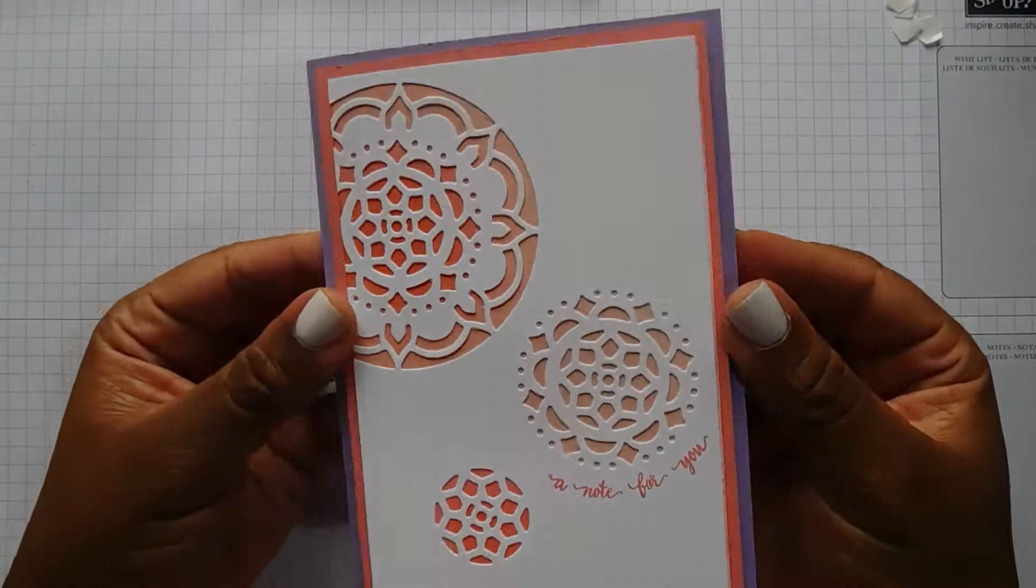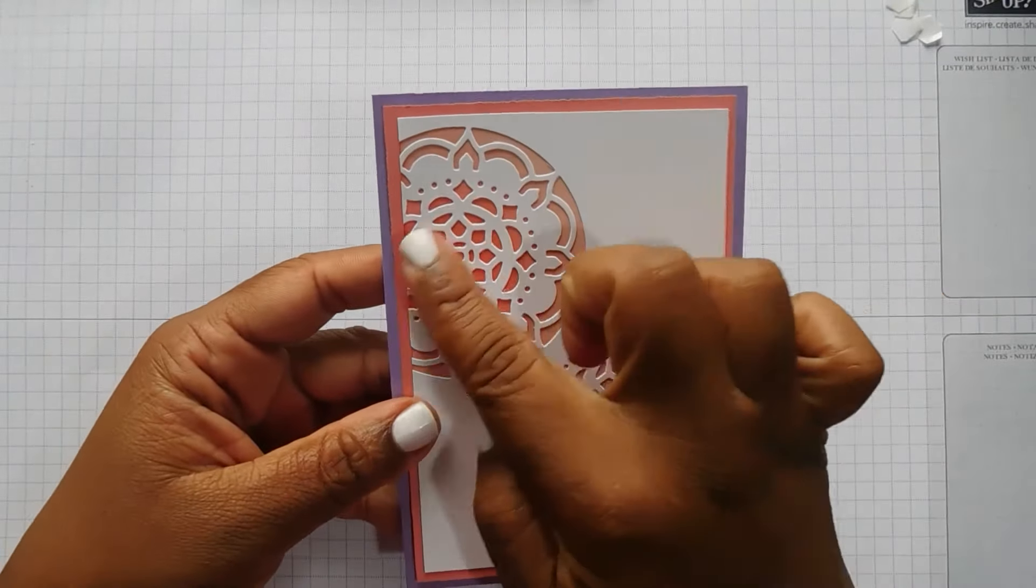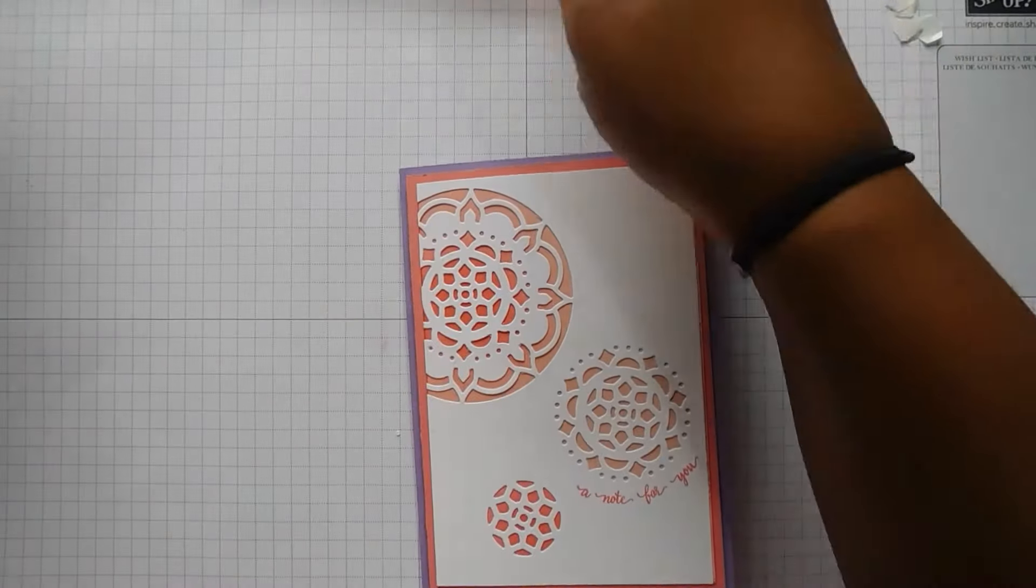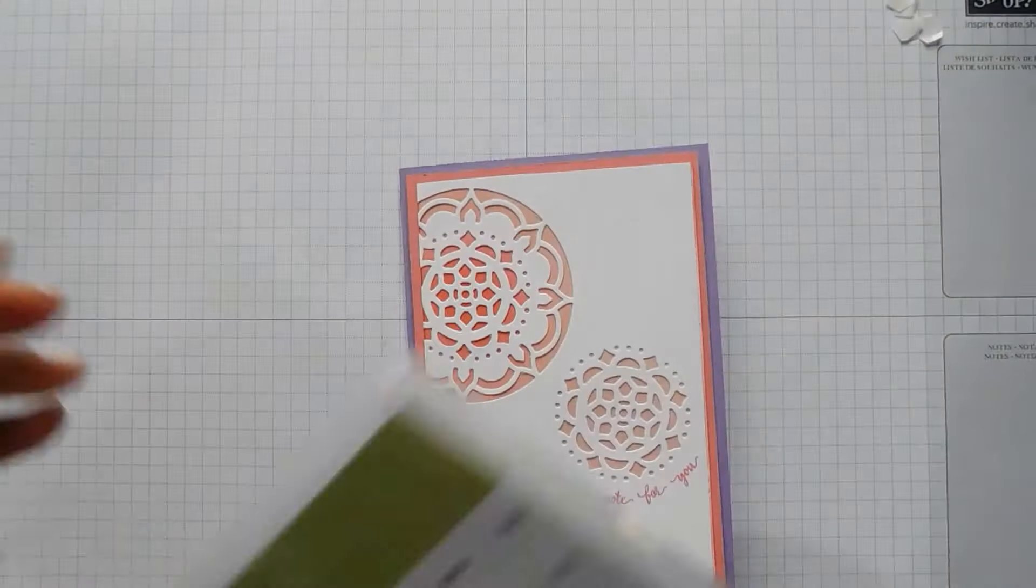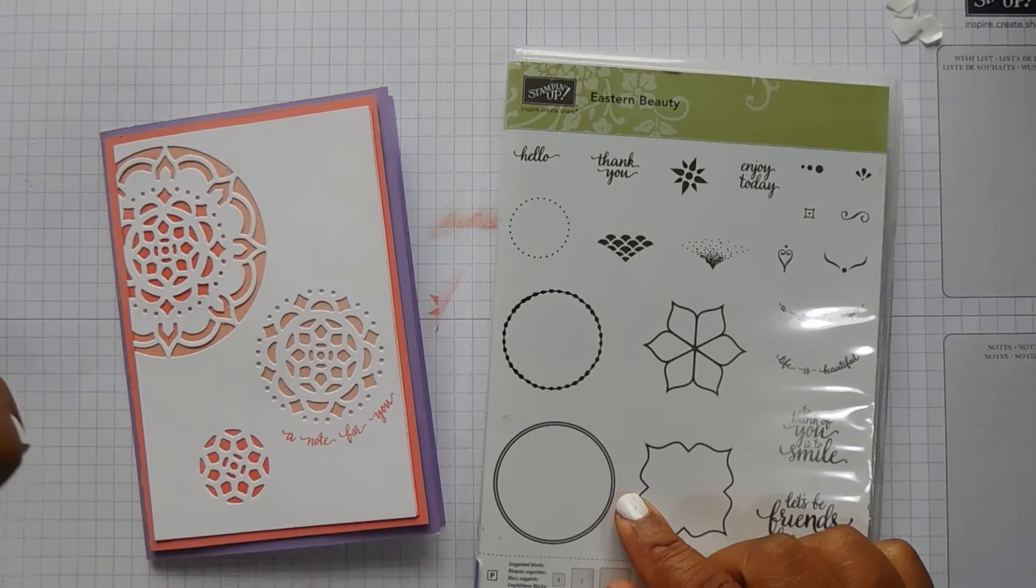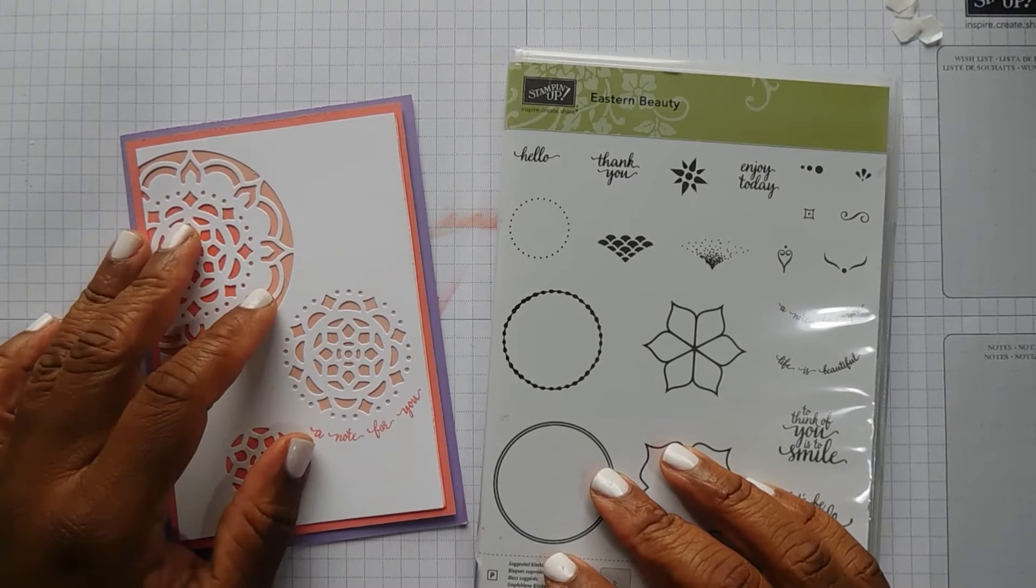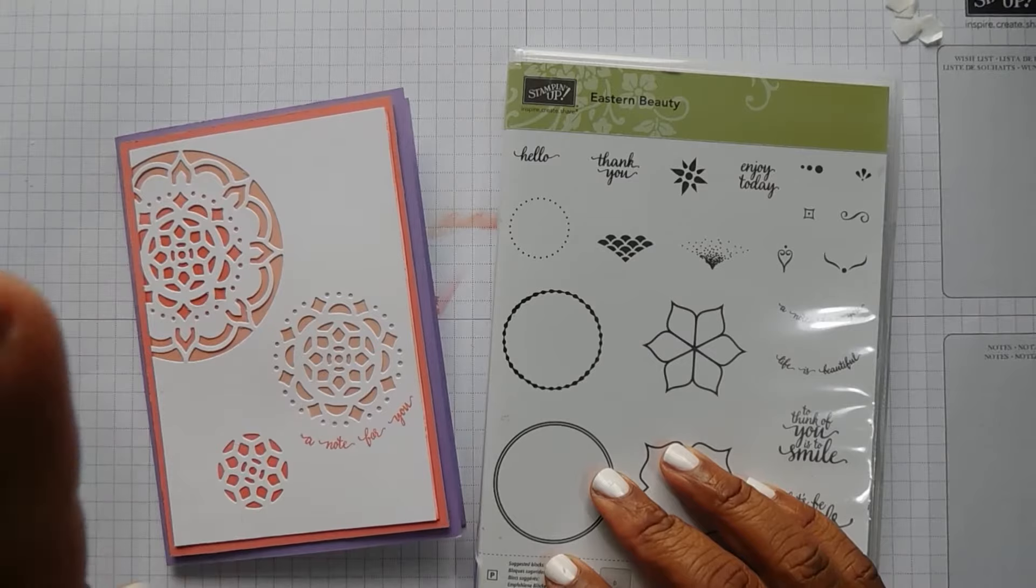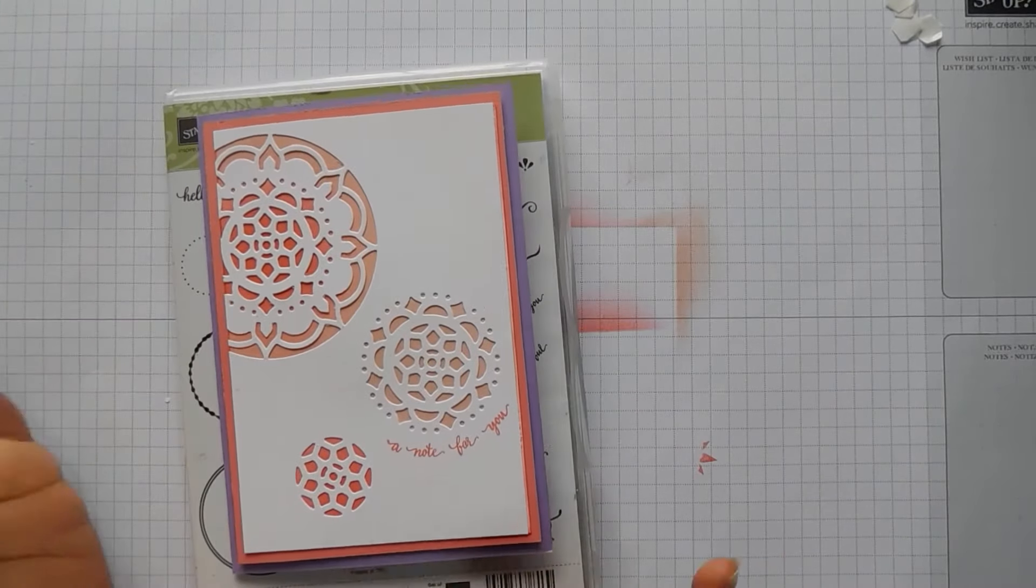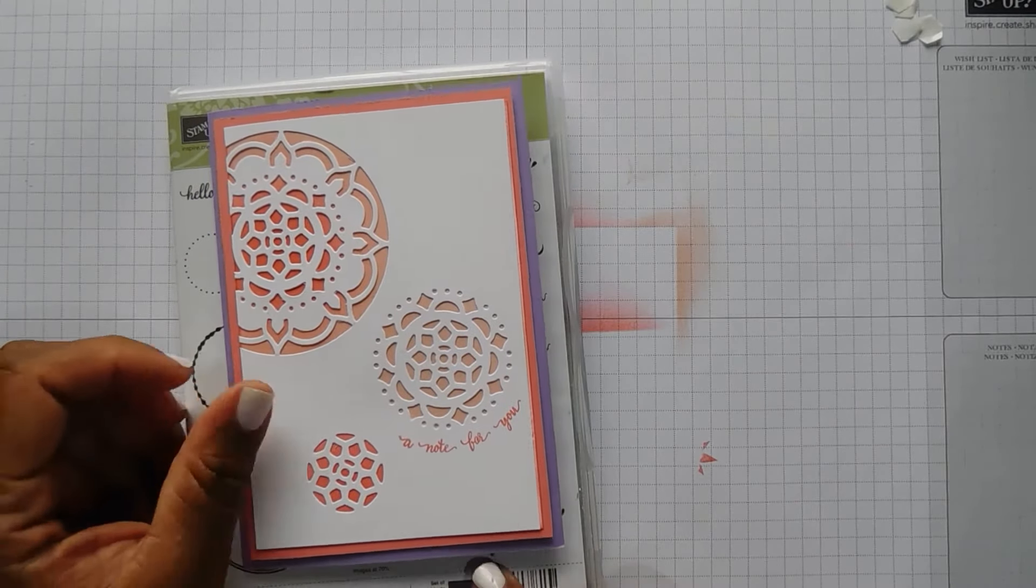What do you think? I love how that's turned out. I'm really pleased with that, how the sort of ombre look is going on. So that is this week's Colour Challenge with the Eastern Beauty stamp set. Just click on the screen and it will be right there. And then there's another video over there for you to watch. And then around here somewhere will be the subscribe button. So if you haven't subscribed already, then please do. Thanks for watching and I'll see you next time.